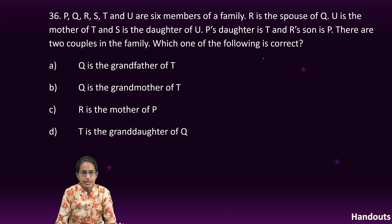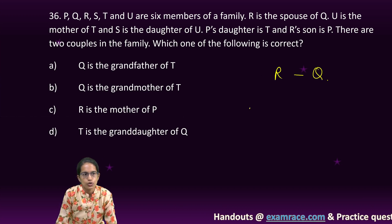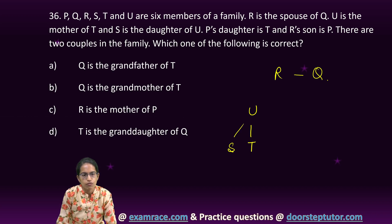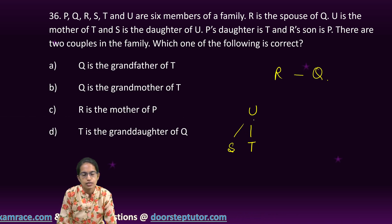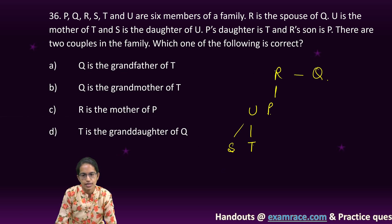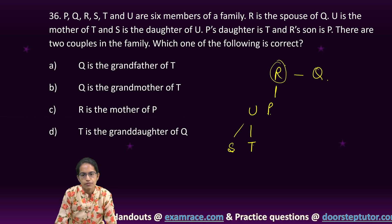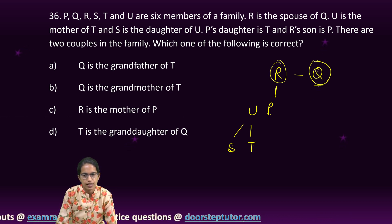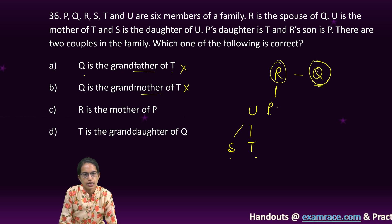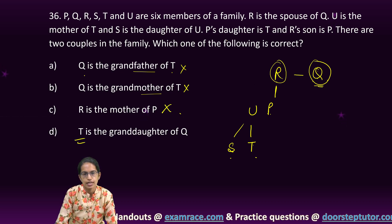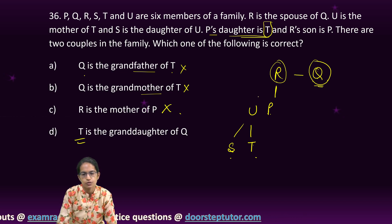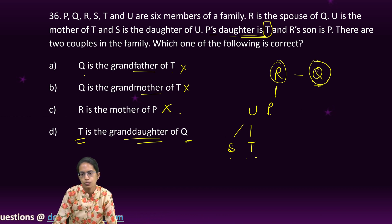The next question is, there are 6 family members. R is the spouse of Q. U is the mother of T. S is the daughter of U. And P's daughter is T. So, P's daughter is T. And R's son is P. So, R's son is P. So, that's the correct hierarchy that is given. Now, I cannot say whether R or Q, who is male, who is female. But definitely, Q and R are the grandparents of S and T. So, Q is a grandparent of T. That is correct. But whether Q is grandfather or grandmother, I cannot commit. R is the mother. Again, I do not know the gender of R. So, I cannot commit. But T's gender, I know. Because it says P's daughter is T. So, T is female. So, T is the granddaughter of Q. That is definitely correct. So, D is the right option.